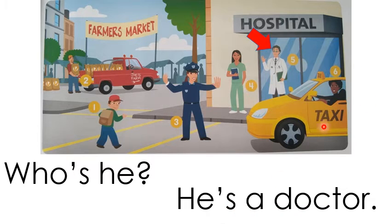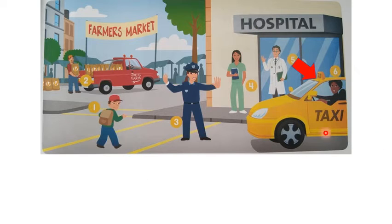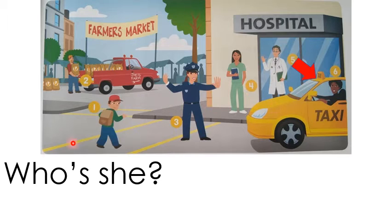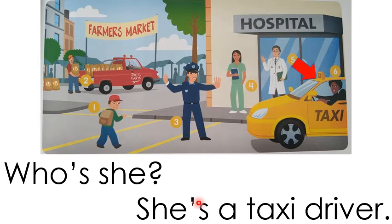The last person over here in the taxi. Are we going to say 'who's he' or 'who's she'? Who's she. Good. Who's she? She's a taxi driver. Good. She's a taxi driver. Your turn. Good. Very good.